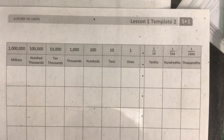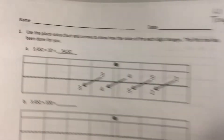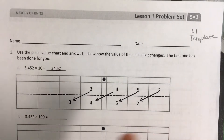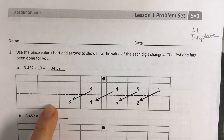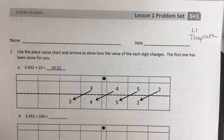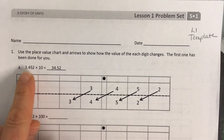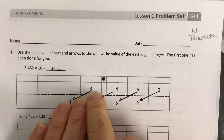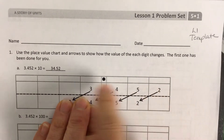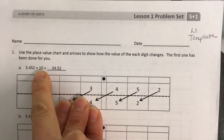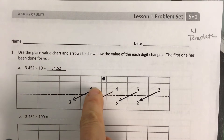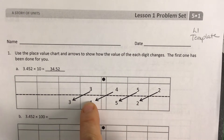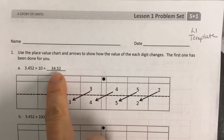In Lesson 1, we basically learned that when you multiply by 10, 100, or 1,000 on the place value chart, the digits get bigger, so they move to the left. Notice the number you start with is 3 and 452 thousandths — 3.452 — and you're supposed to multiply by 10. That means all those digits get one place bigger. The 3 moves to the tens place and all the numbers follow behind it, so the number now becomes 34 and 52 hundredths.